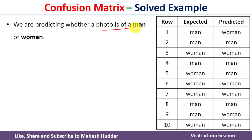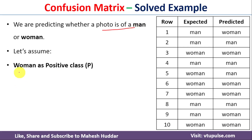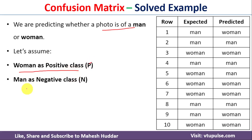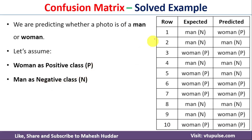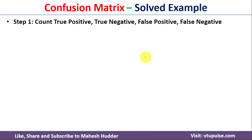We are predicting whether a photo is of a man or woman. We will assume women as the positive class, denoted as P, and men as the negative class, denoted as N.